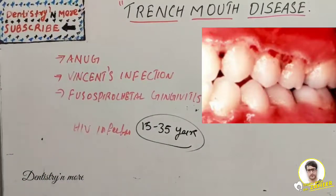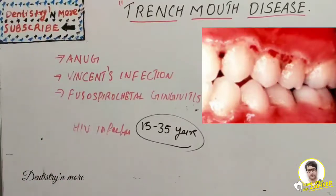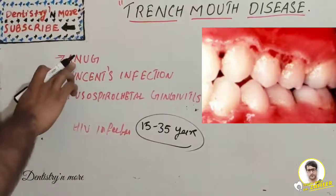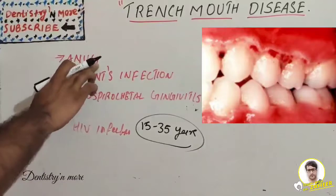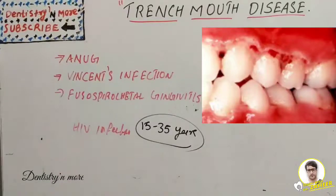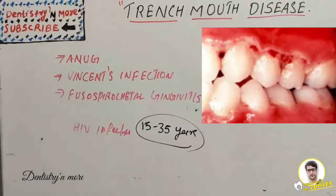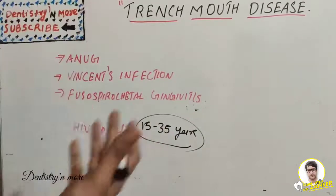These three structures undergo necrosis: the free gingival margin, the crest of gingiva, and the interdental papilla. The condition has many synonyms — acute necrotizing ulcerative gingivitis, Vincent's infection, acute ulceromembranous gingivitis, and fusospirocetal gingivitis. It follows an epidemic pattern.